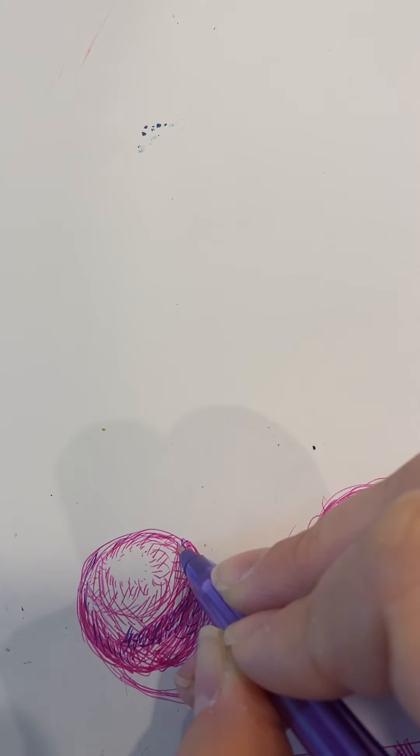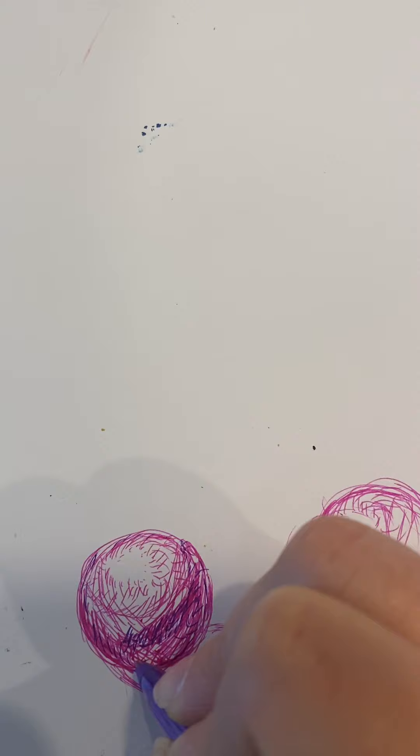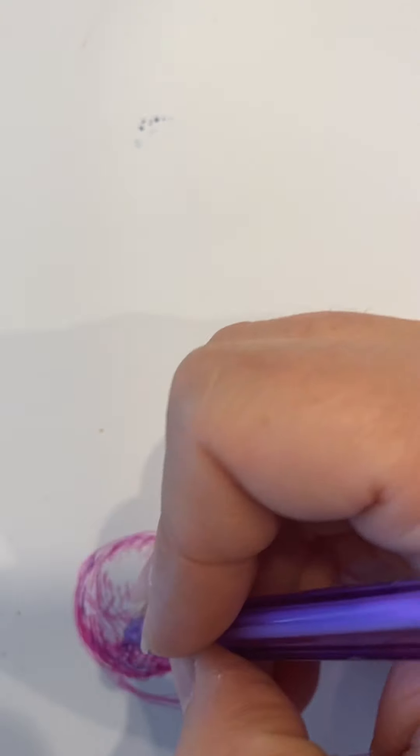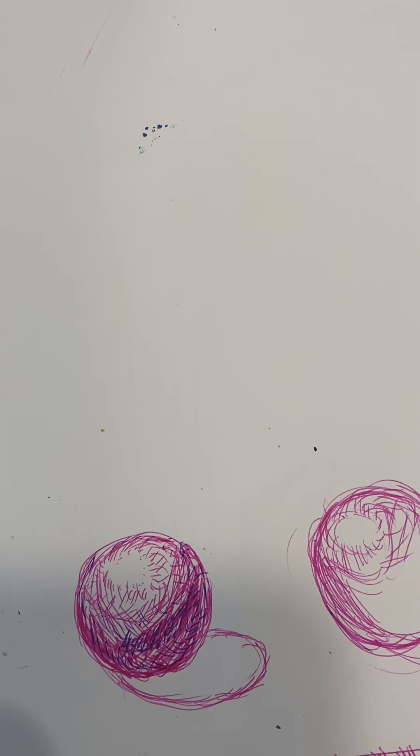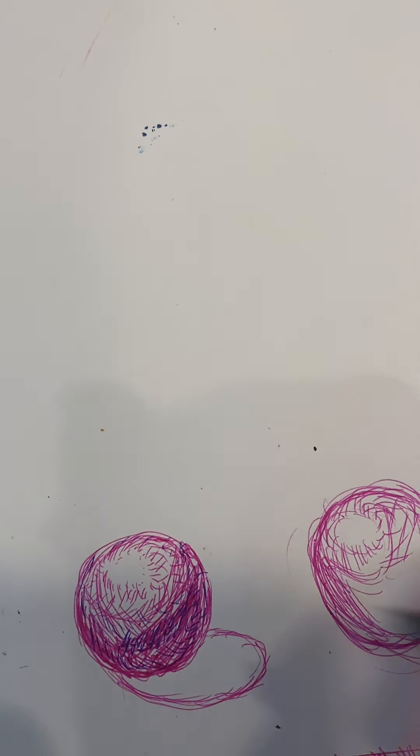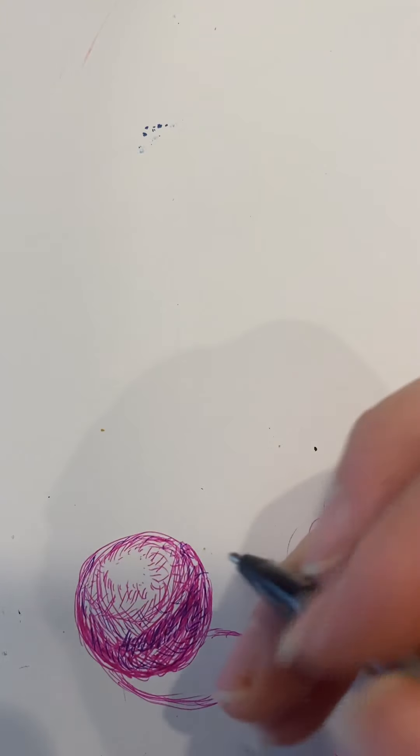I know the temptation is always just to use black to make things darker. The problem with always using black to make things darker is that black flattens your color and flattens your form. So if you're trying to make something feel or look three-dimensional, and then you add something to it that makes it feel flat, you're kind of counteracting what you're trying to do.